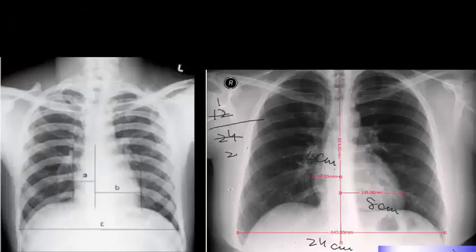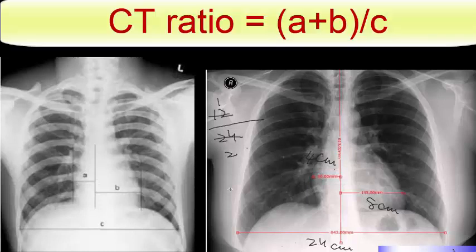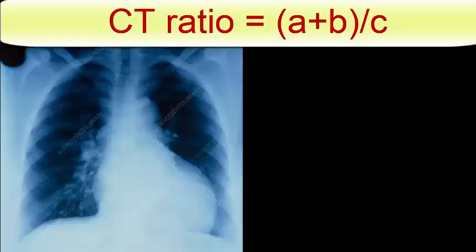An estimate of overall heart size can be made by comparing the maximum width of the cardiac outline with the maximum internal transverse diameter of the thoracic cavity. This is called the cardiothoracic ratio. Cardiomegaly is described when the cardiothoracic ratio is greater than 0.5.